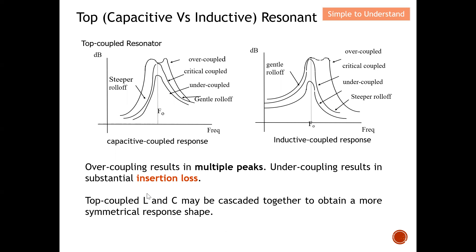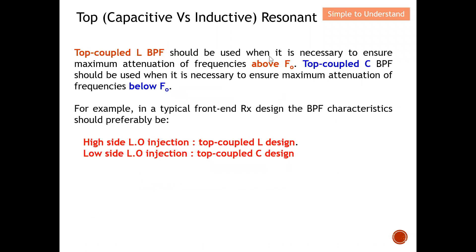Typically, top-L and top-C resonators may be cascaded together. When cascaded, we can obtain a more symmetric frequency response — the top-C resonator contributes a steeper roll-off on the left side while the top-L resonator contributes a steeper roll-off on the right side. Therefore, it may be beneficial to combine top-L and top-C together for a symmetric frequency response. A top-L bandpass filter should be used when maximum attenuation of frequencies above the resonant frequency f₀ is necessary.